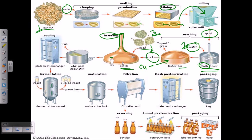Once everything is mixed with the water, the mixture contains every bit of that typical beer flavor. Now that the mixture has been heated, we need to cool it. We transfer the mixture into a plate heat exchanger — a cooling chamber — where it passes from one plate to another so that heat is dispersed to the plates and the mixture becomes cool.